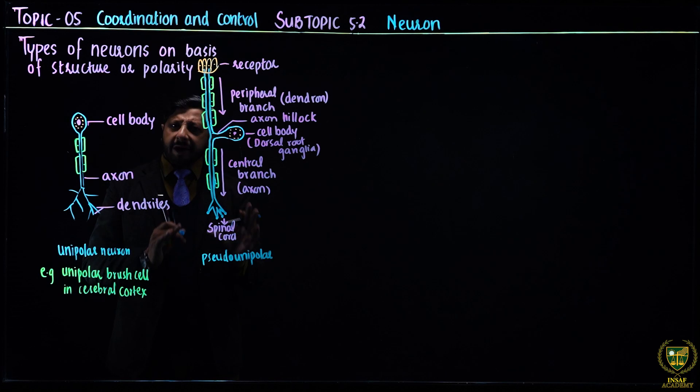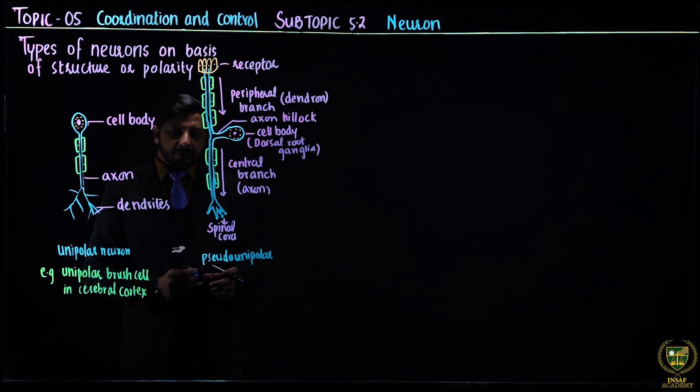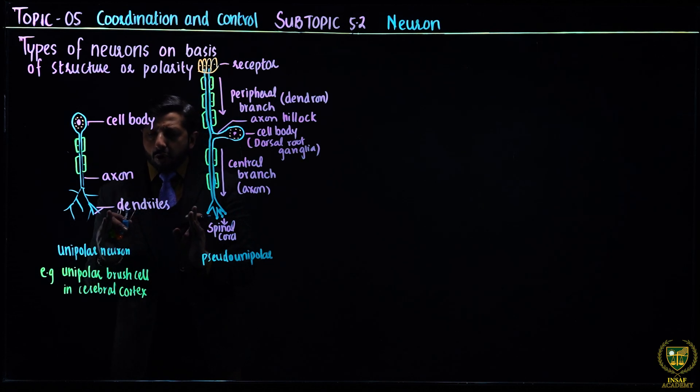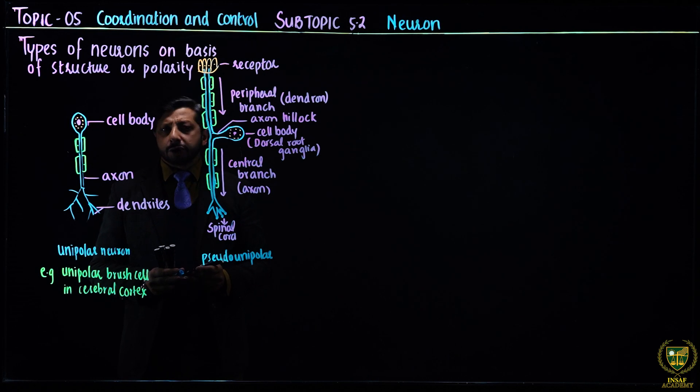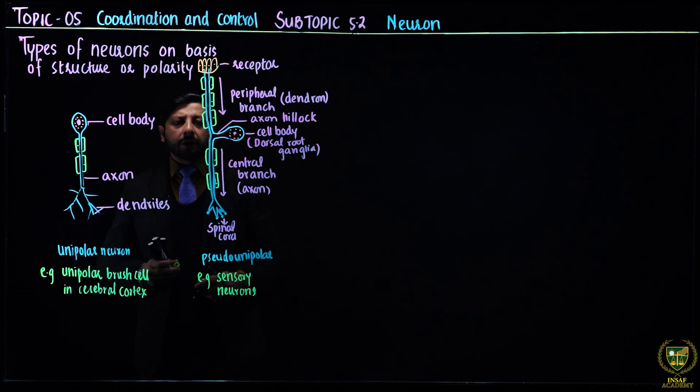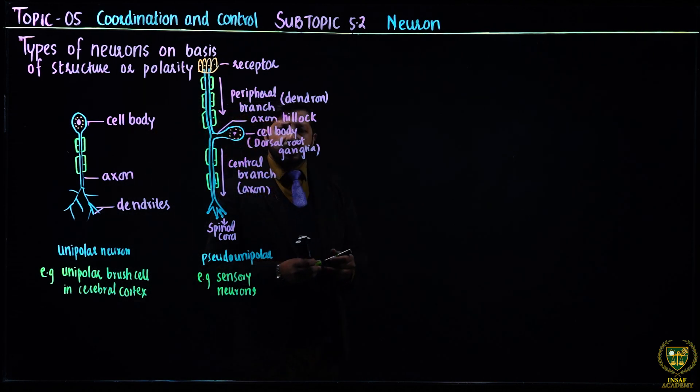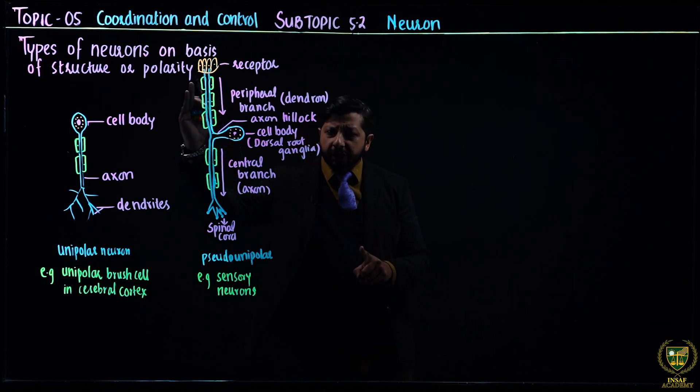In the dorsal root ganglia, the cell bodies aggregate to form the dorsal root ganglia. So this is called pseudo-unipolar. Pseudo means false - it looks like one but actually it has two processes. Most of the time, this is also called unipolar. You can call it either unipolar or pseudo-unipolar. The example is the sensory neuron. Structurally it looks like axon.